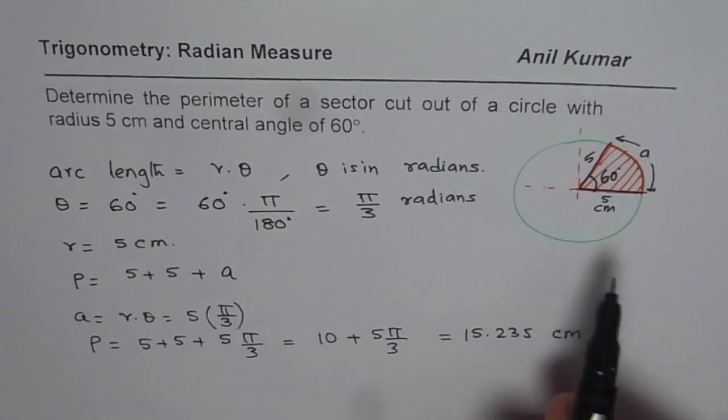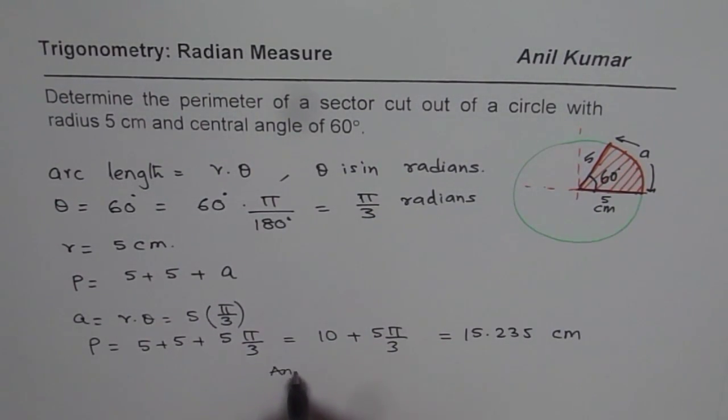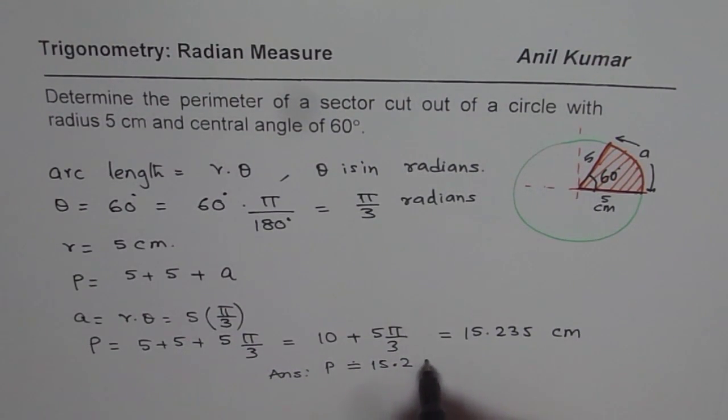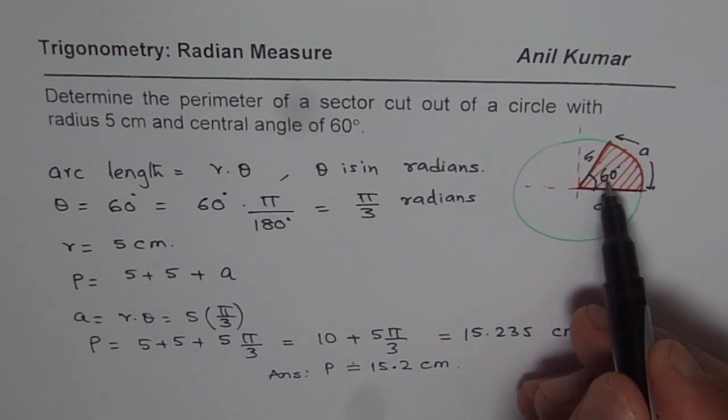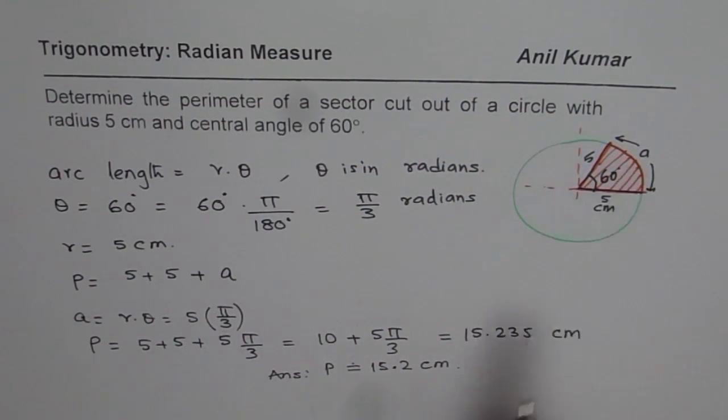So that is how we can calculate perimeter of a sector. Our answer is that the perimeter is approximately 15.2 centimeters in this particular case. I hope that helps. The key here is to convert the angles to radians before finding the arc length. I hope that helps. Thank you and all the best.